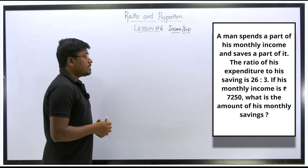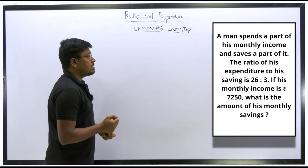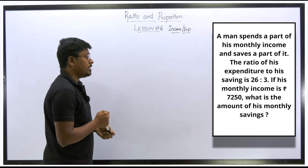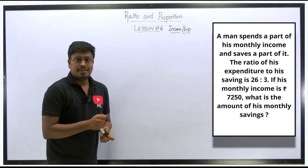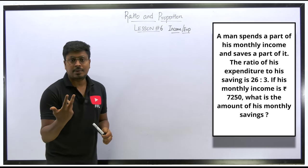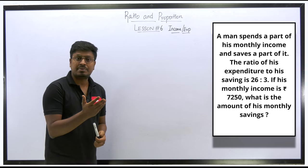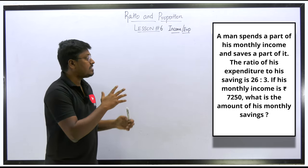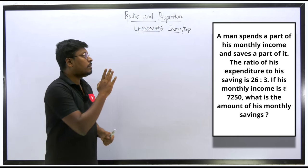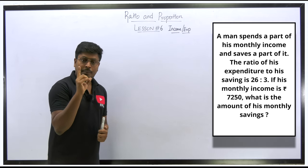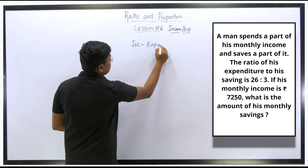Question 3: A man spends part of his monthly income and saves the rest. The ratio of expenditure to savings is 26:3. If his monthly income is ₹7,250, find his monthly savings. Unlike the previous two questions, this involves only one person, but the formula is the same: income equals expenditure plus savings.